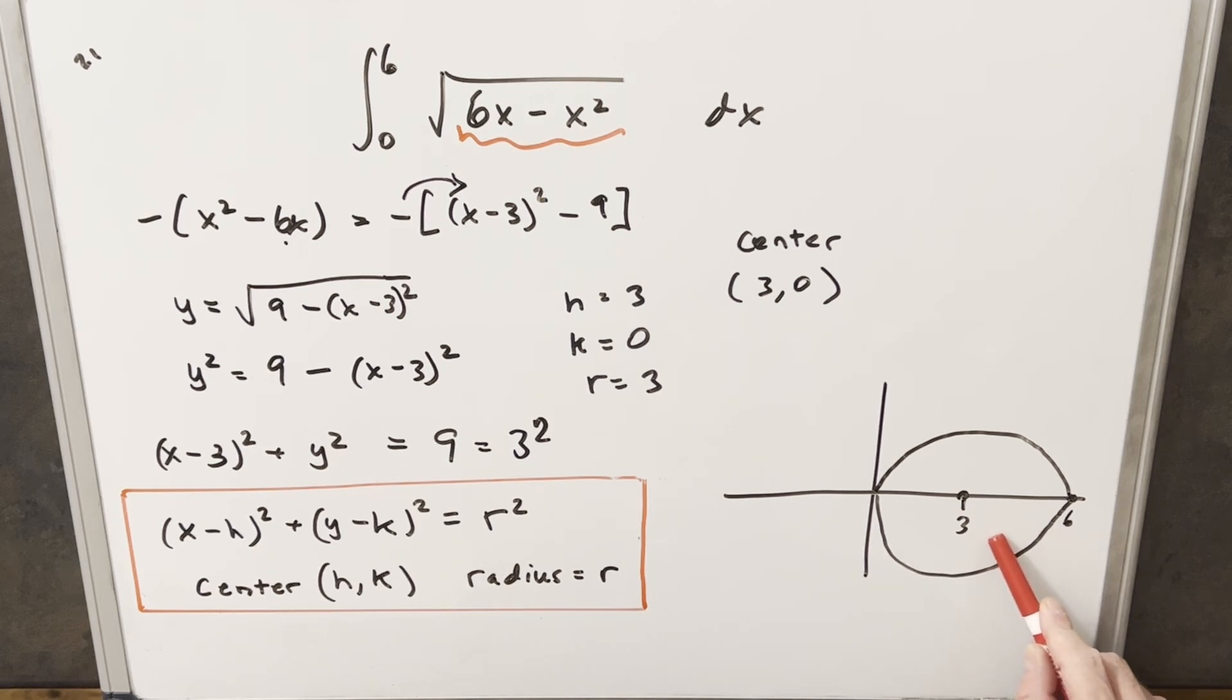So now we've got my weak attempt at drawing a circle over here on the right. And again, we have our center point here at (3, 0).